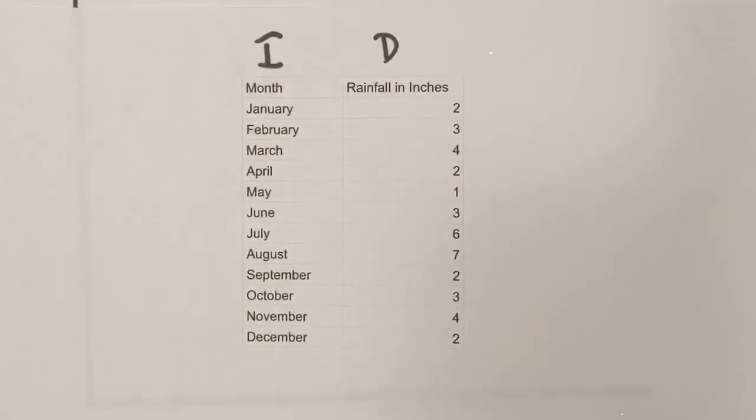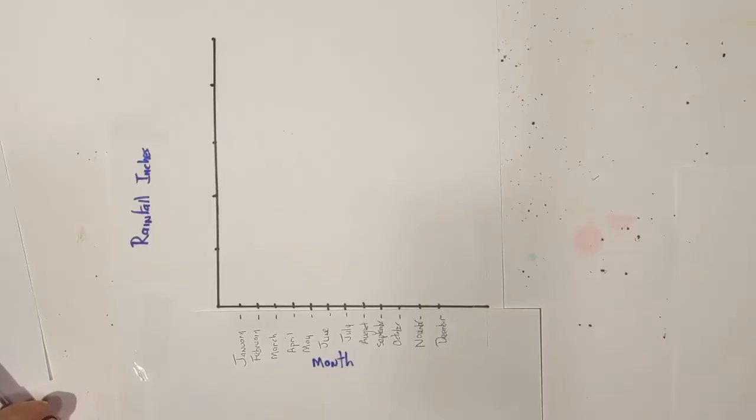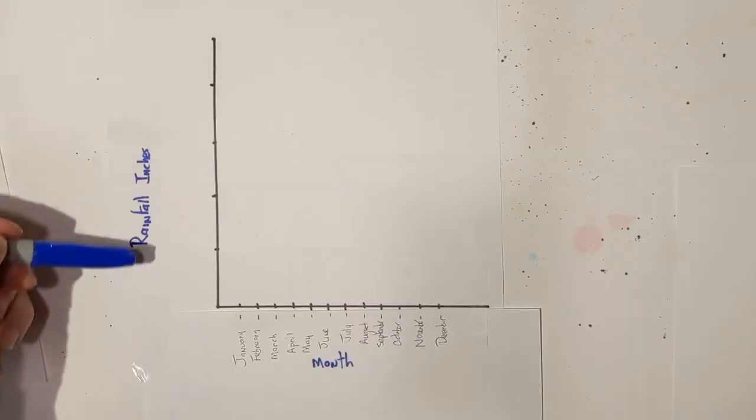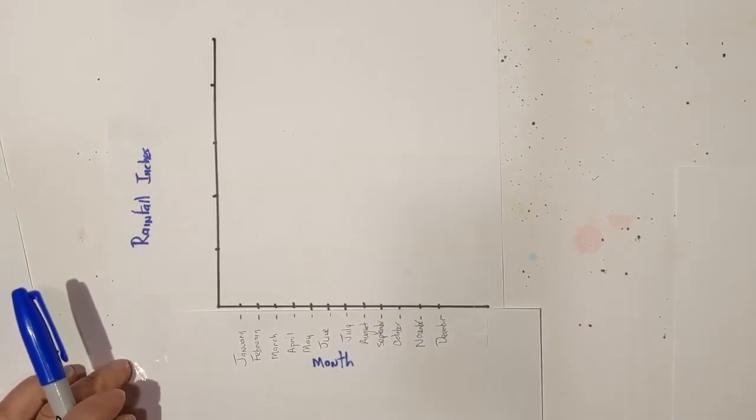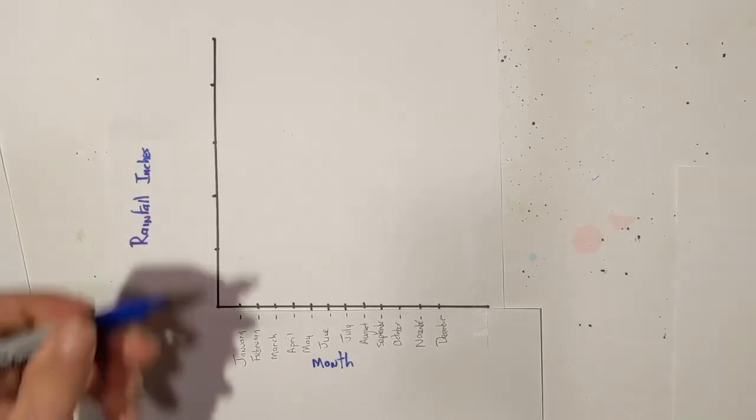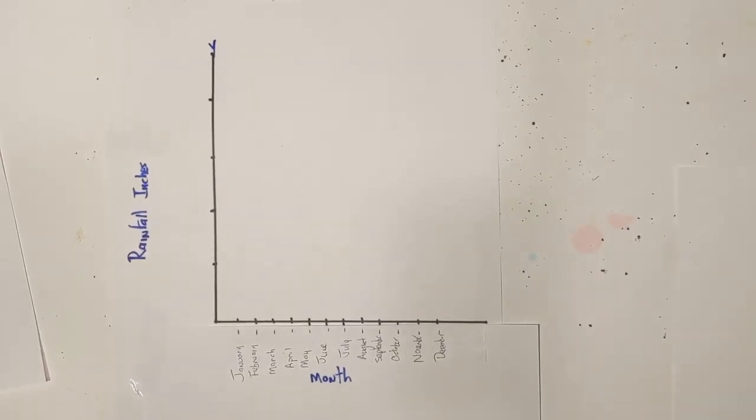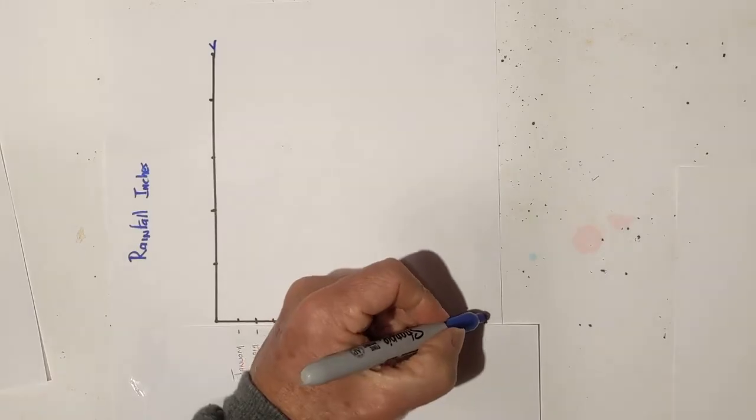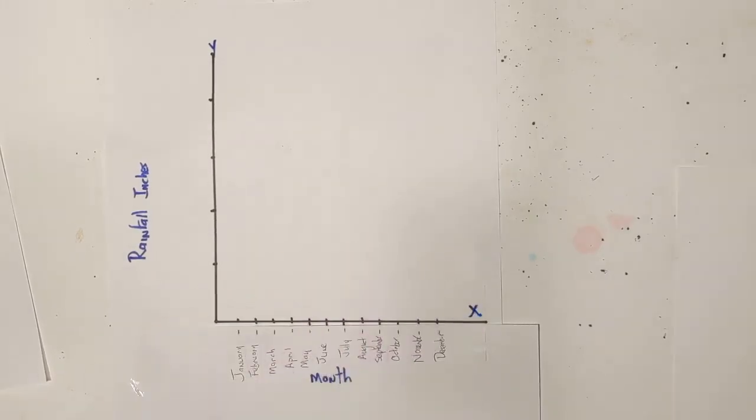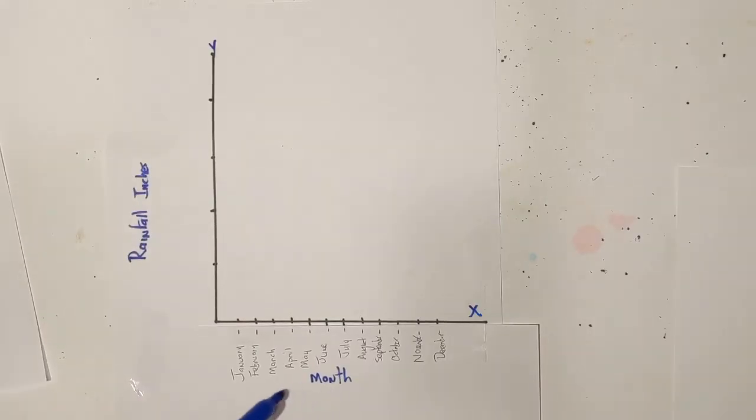The first thing we are going to do is label our axes. So let me do that. Here's what we've done. We know that rainfall is the independent variable and it goes on the y-axis. This is the y-axis. And then the dependent variable goes on the x-axis. I went ahead and labeled them. I have rainfall in inches and then the month.